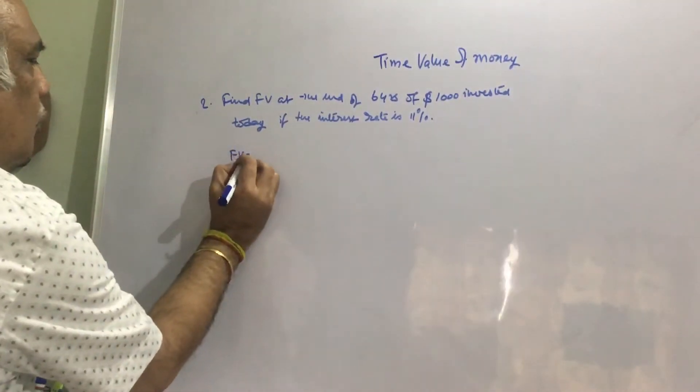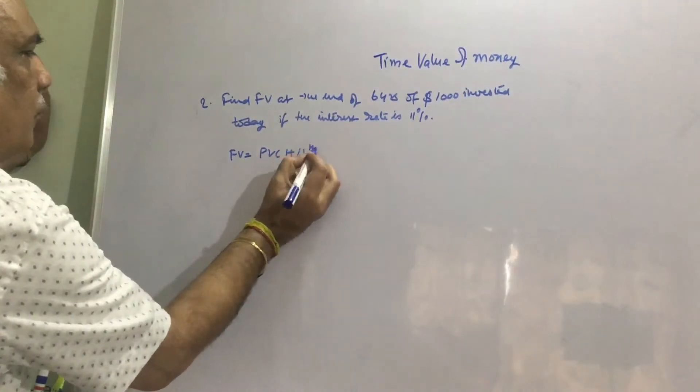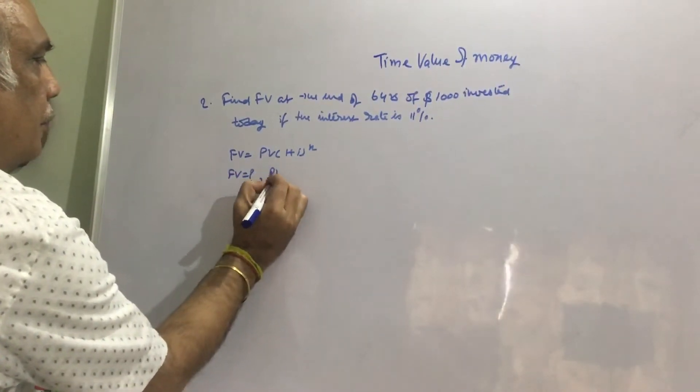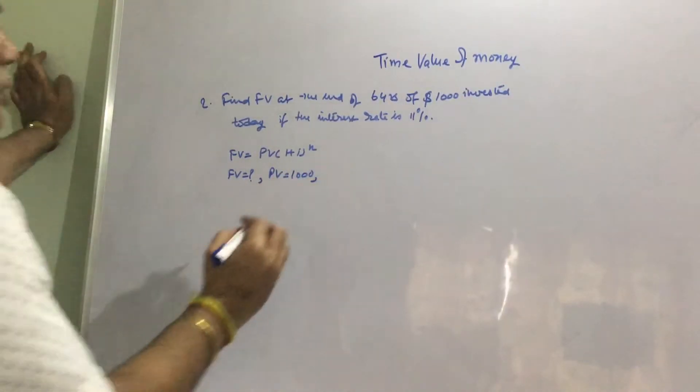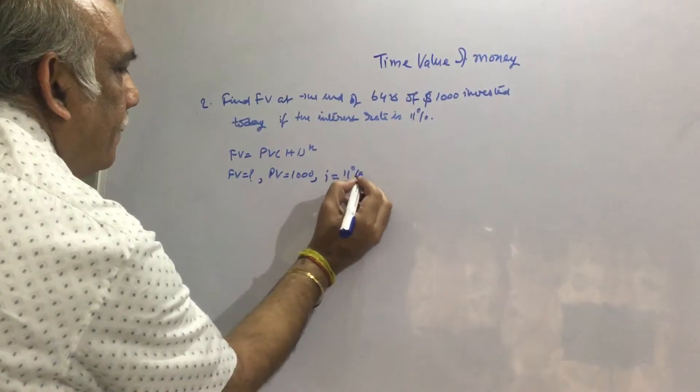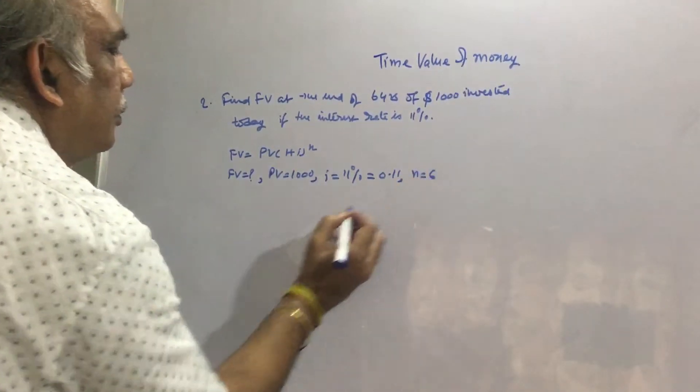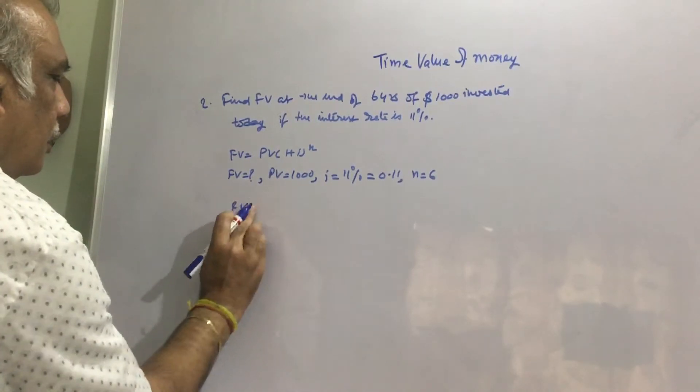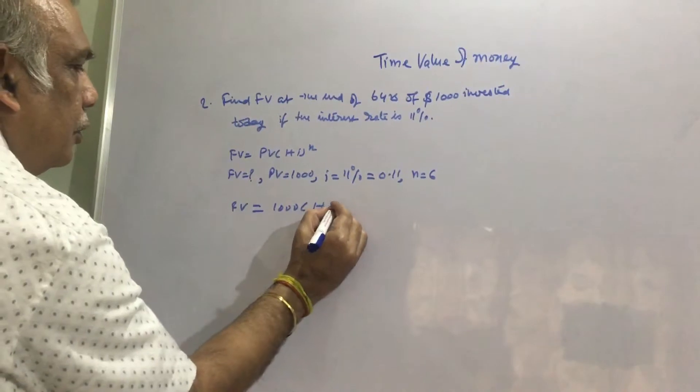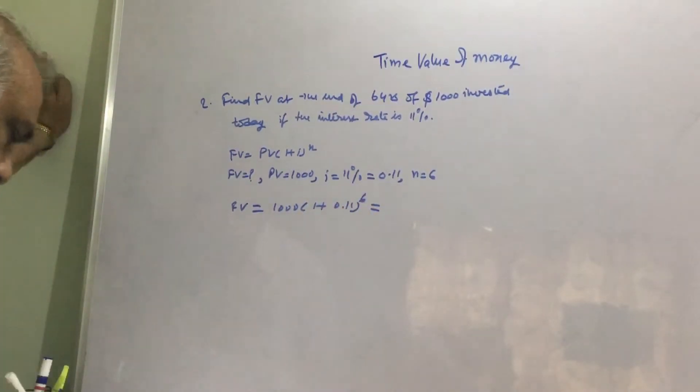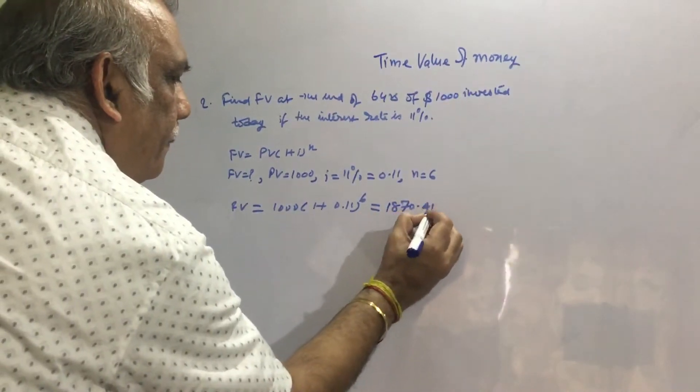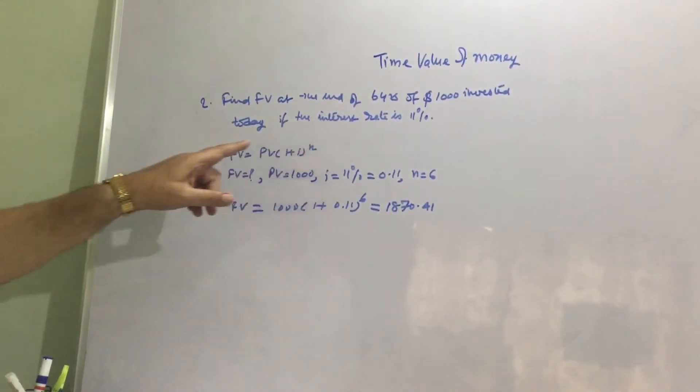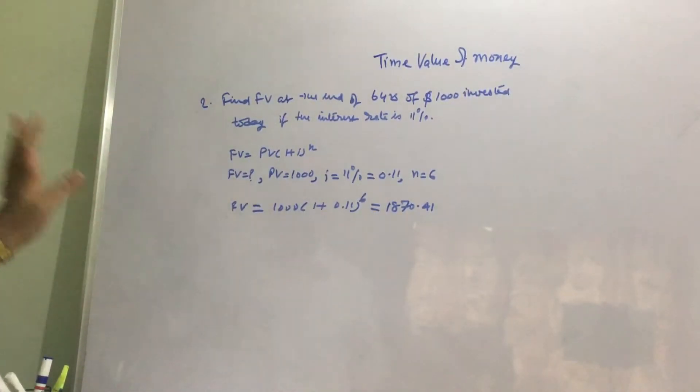Friends, we know FV equals PV times (1 plus i) raised to power n. FV we have to find out. PV is $1,000, i is 11% or 0.11, and n is 6 years. So putting these values, we get FV equals 1,000 times (1.11) to the power 6. By solving this, we get $1,870.41. See, there are 4 unknowns in this equation. If we know any 3, we can calculate the 4th.